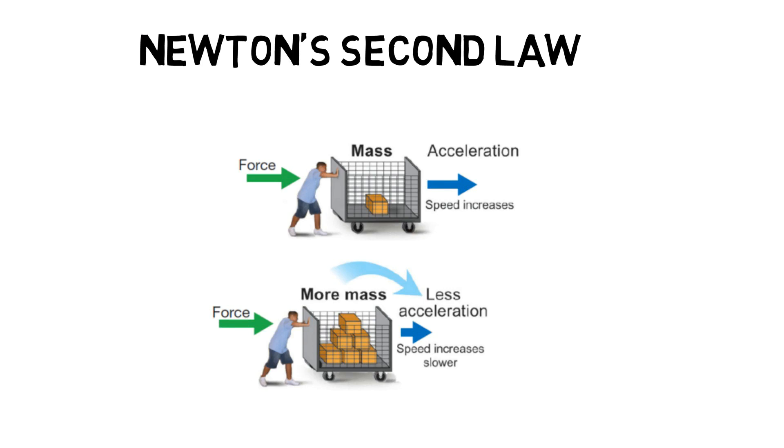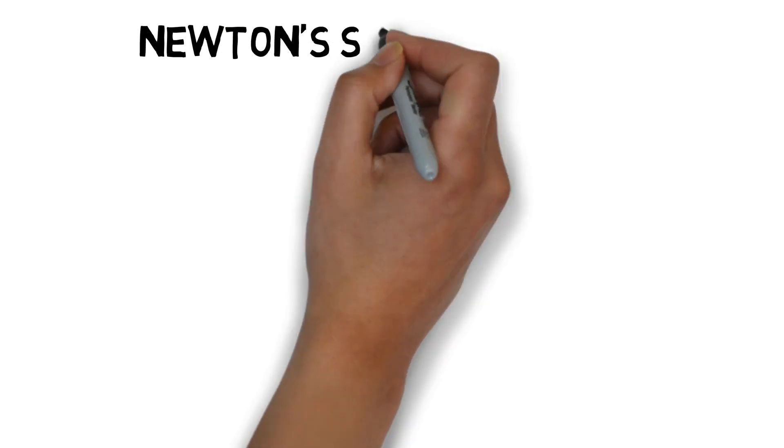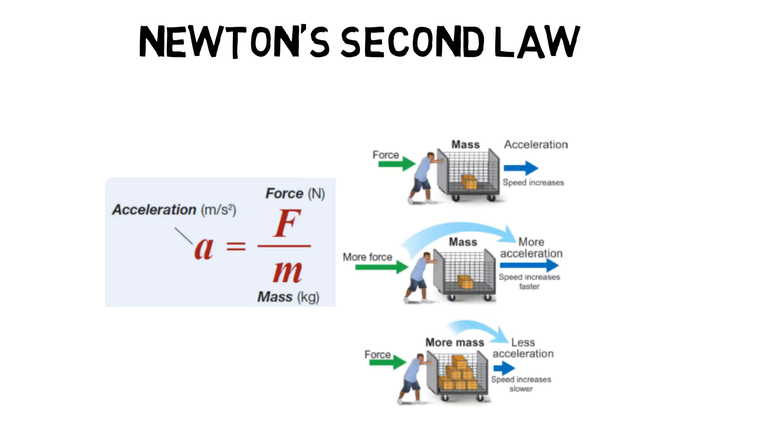This law helps us calculate the acceleration from a force. We know the law says force equals mass times acceleration. You can change this formula around to solve for acceleration by dividing both sides by the mass. So acceleration equals force divided by mass. Force is directly proportional to acceleration, meaning a greater force will lead to greater acceleration. Mass is inversely proportional to acceleration, meaning that with greater mass, the acceleration will decrease.